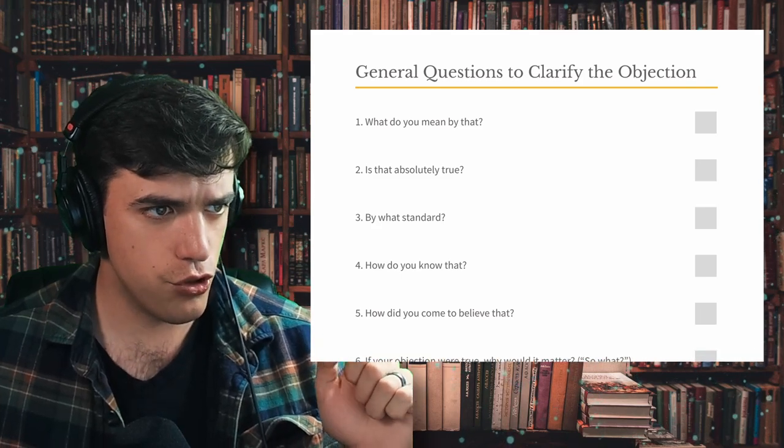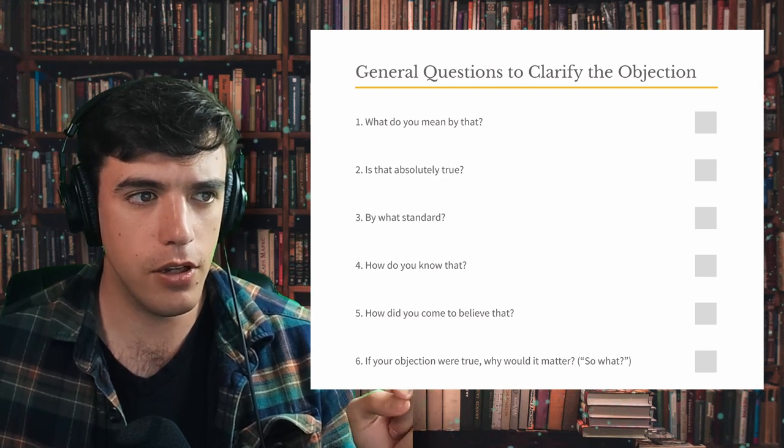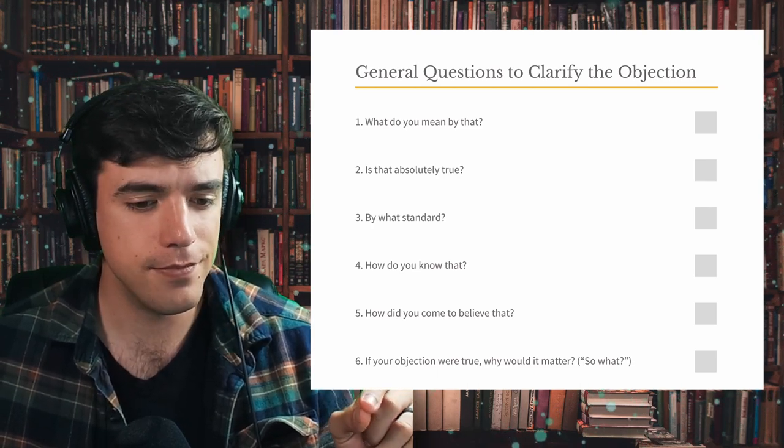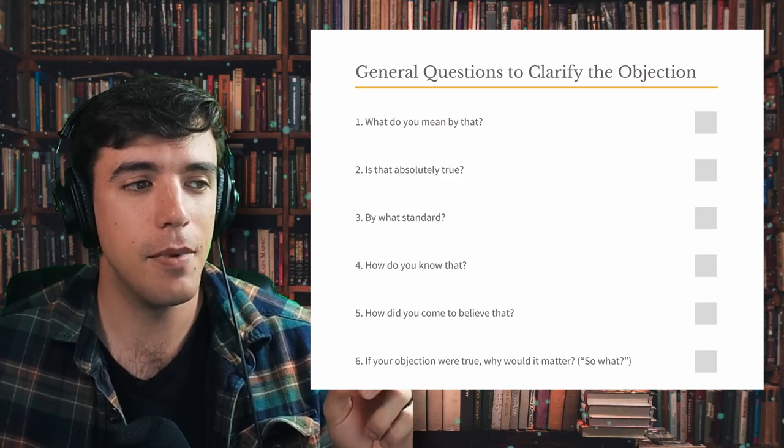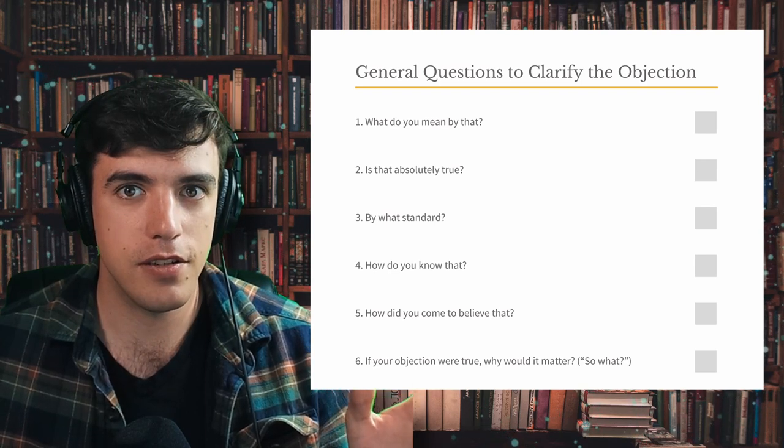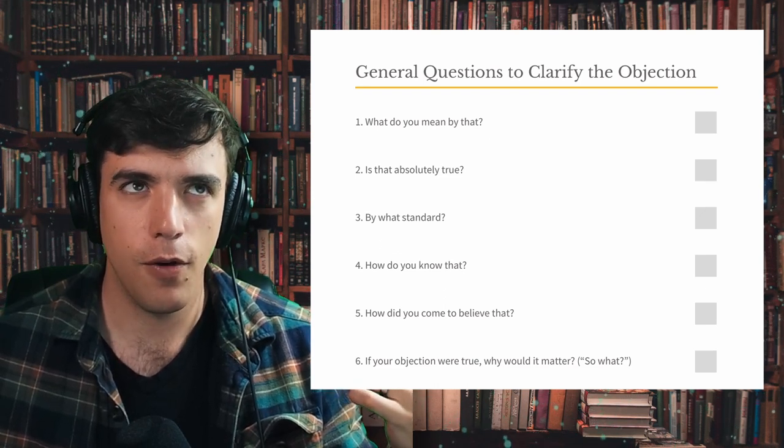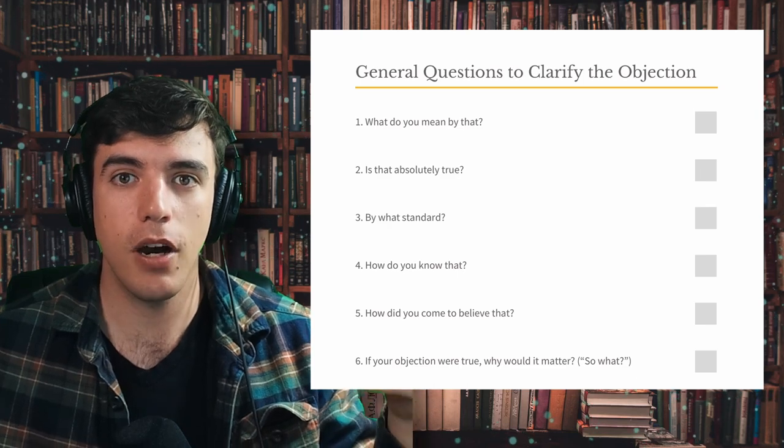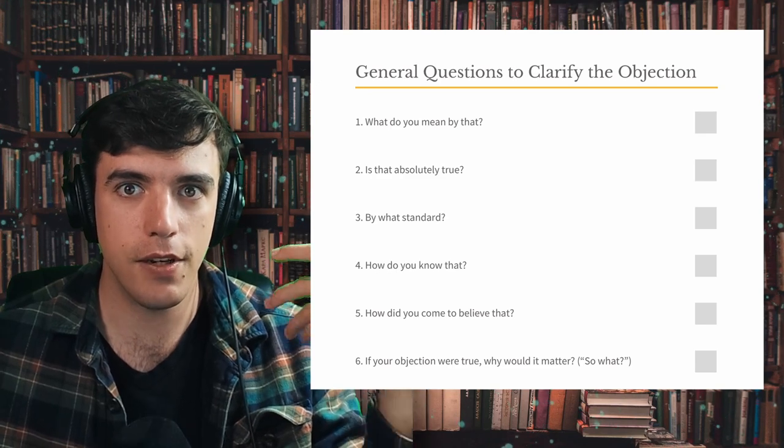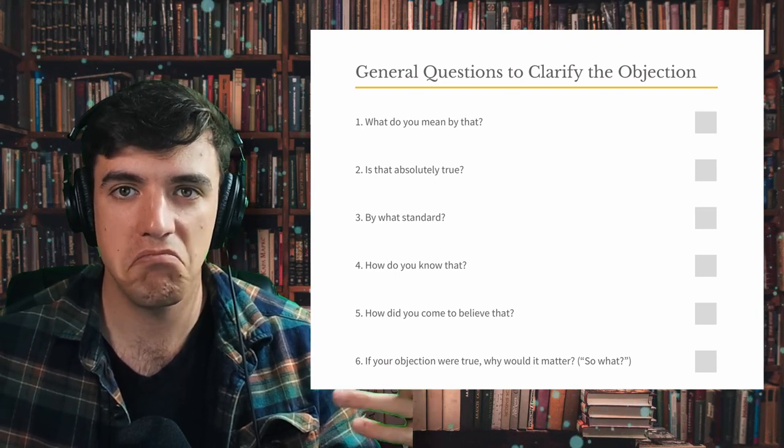Number six, if your objection were true, why would it matter? And in parentheses, so what? This again, seems like they're pulling from Greg Koukl because he kind of talked about it that way. That's a really fun one. If somebody is kind of being emotional, and you have to be careful with this. If someone's being a little bit emotional, but you sense that you can diffuse them with a simple question, and they're making all these objections. Like if somebody does a, I think it's called a gish gallop, where they bring all of these points up, and it's so much that you can't talk about all of the pieces.